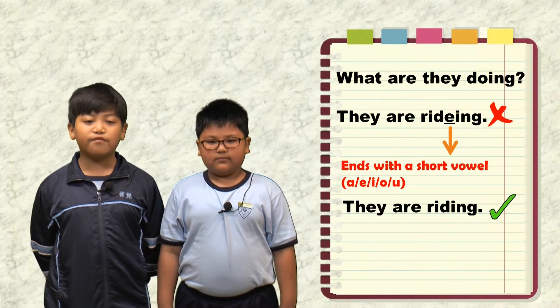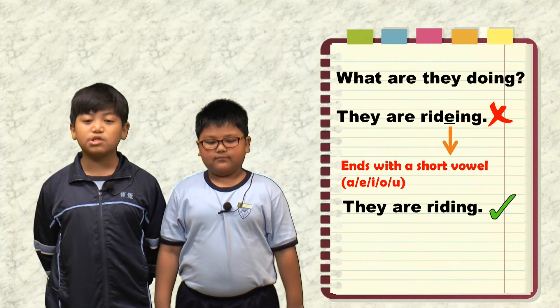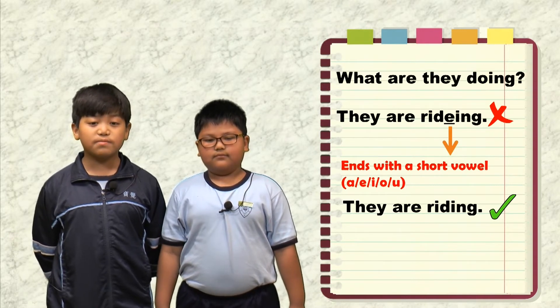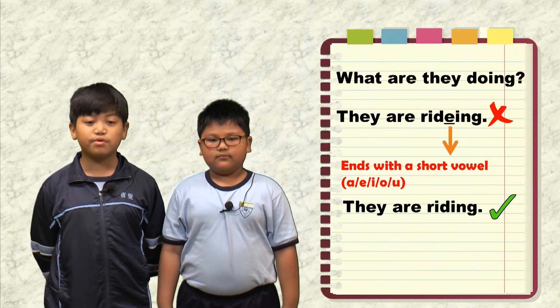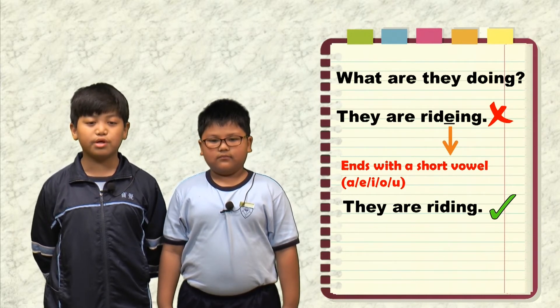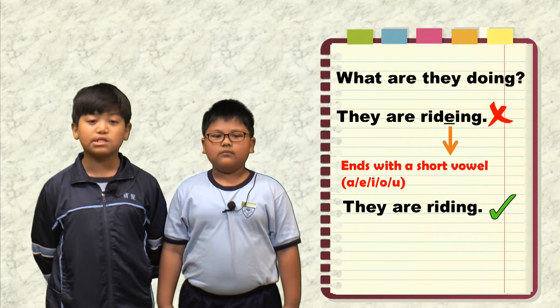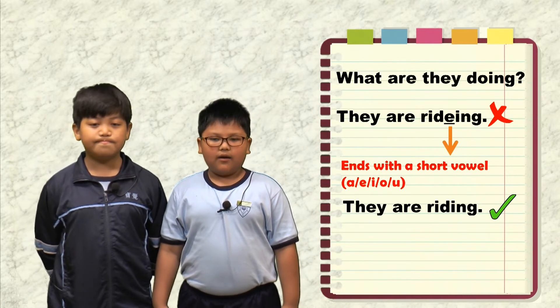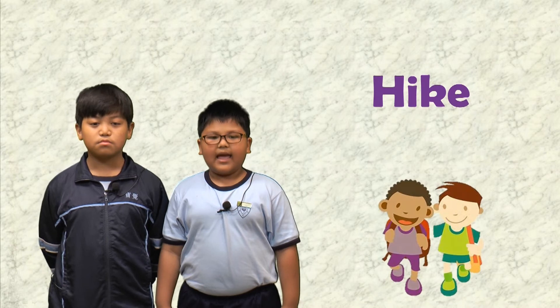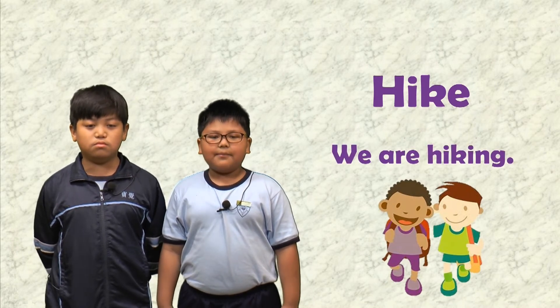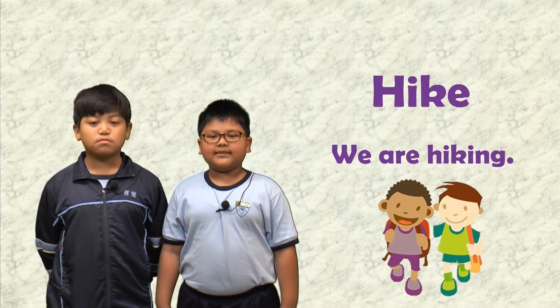When a verb ends with an E, since you are talented, can you think of some other examples where we have to take away the E and add '-ing' when using present continuous tense? I can think of the verb 'hike' — 'we are hiking' — H, I, K, I, N, G. Am I correct, English detective?